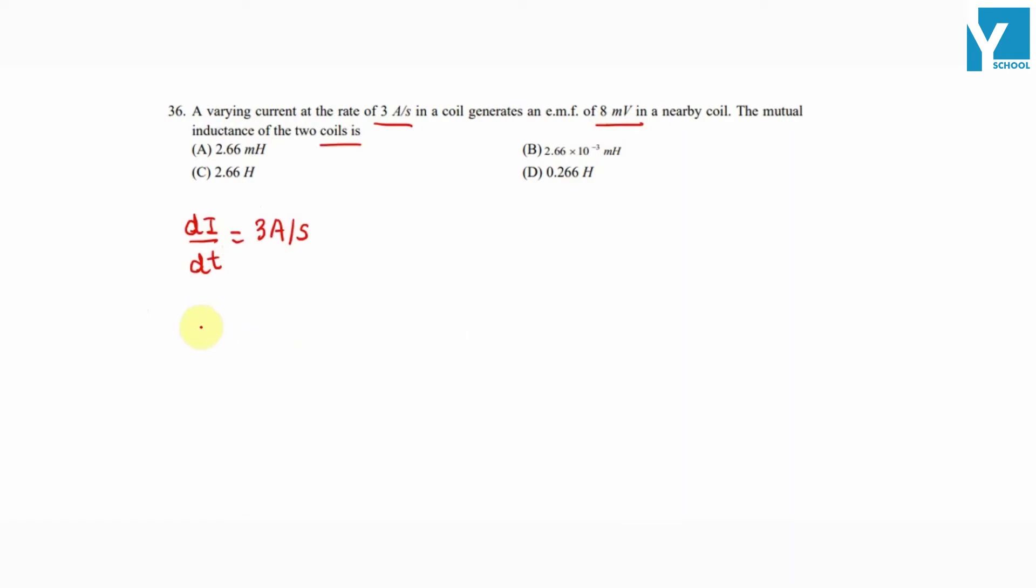The induced emf is 8 millivolts in the nearby coil. So this is coil 1 and this is coil 2. In coil 1, di/dt is 3 amperes per second in the secondary coil.